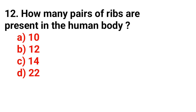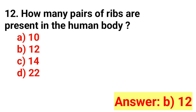Question number 12. How many pairs of ribs are present in the human body? The answer is Option B: 12.